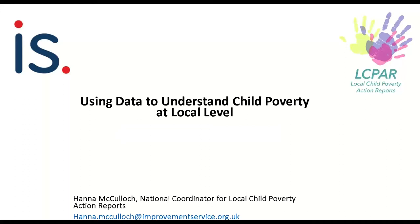Data on the population is also vital. We know that certain household types are significantly at higher risk of experiencing child poverty. The six priority groups highlighted in the local guidance are: lone parent households, families with three or more children, families with a baby under one, BME households, households where someone is disabled, and households where the mother is aged 25 or under. Considering the prevalence and location of those groups in the local area can help us build a better understanding of their needs, the kind of support that might be effective, and whether we're managing to reach them with services.